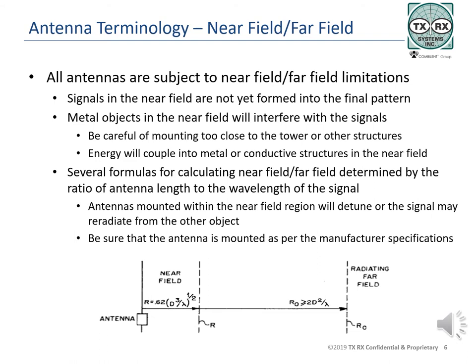For long antennas — those over half a wavelength — the far field begins at distances of over five times the antenna length. Manufacturer's recommendations must be used when mounting antennas. All antennas must be placed on the tower to be outside the near field to operate correctly. Manufacturer's specifications for standoff and mounting take these regions into account and must be followed stringently.